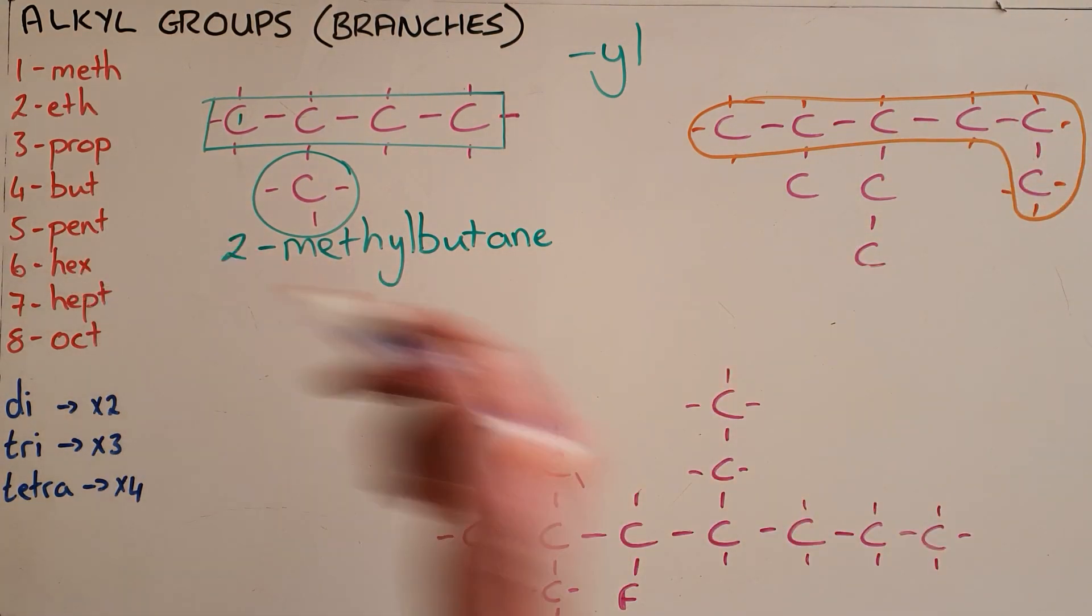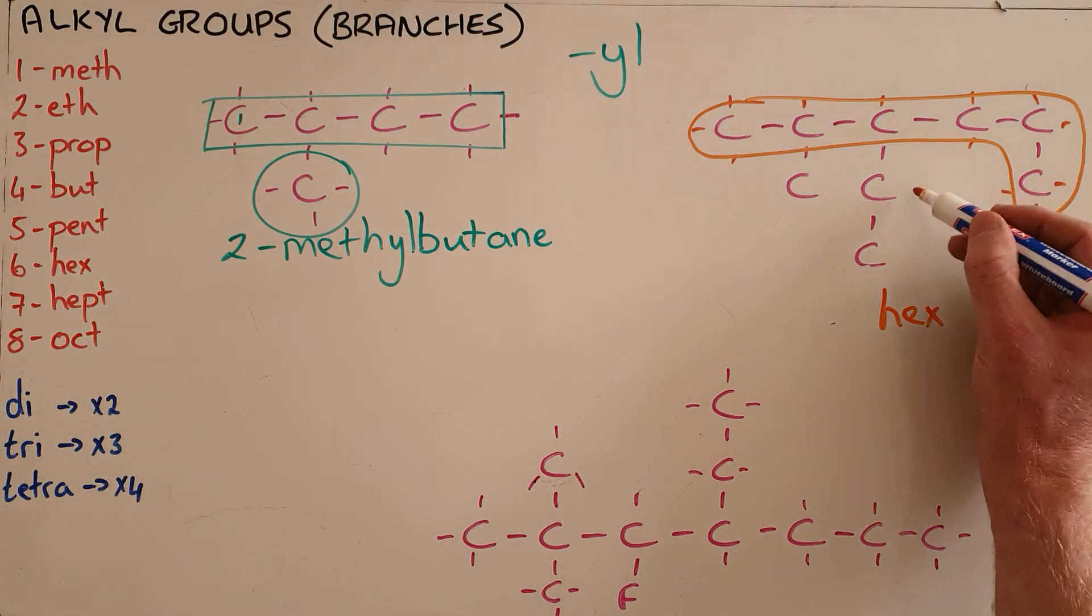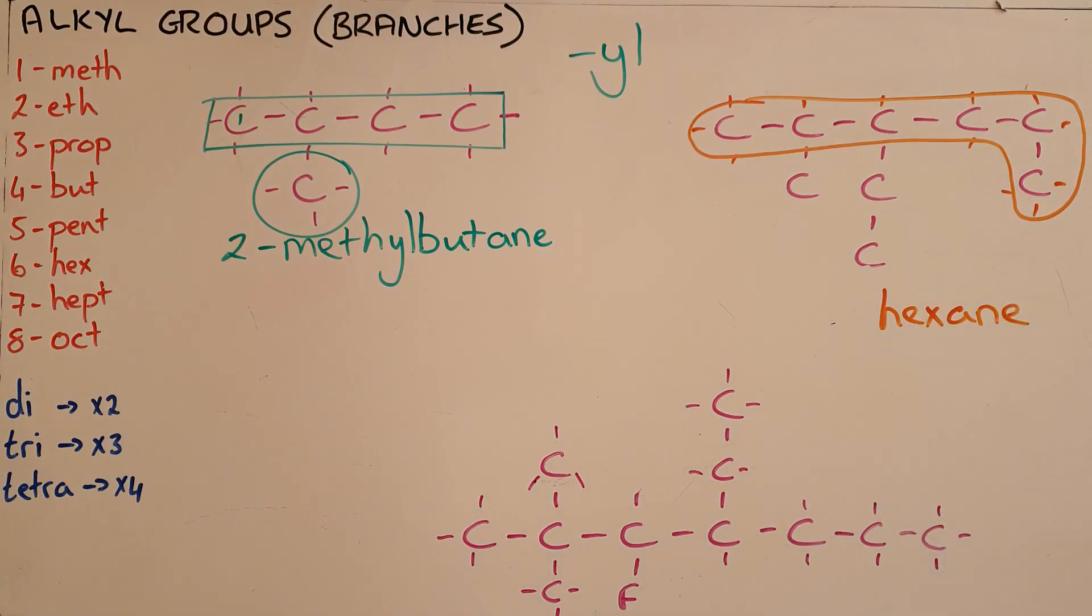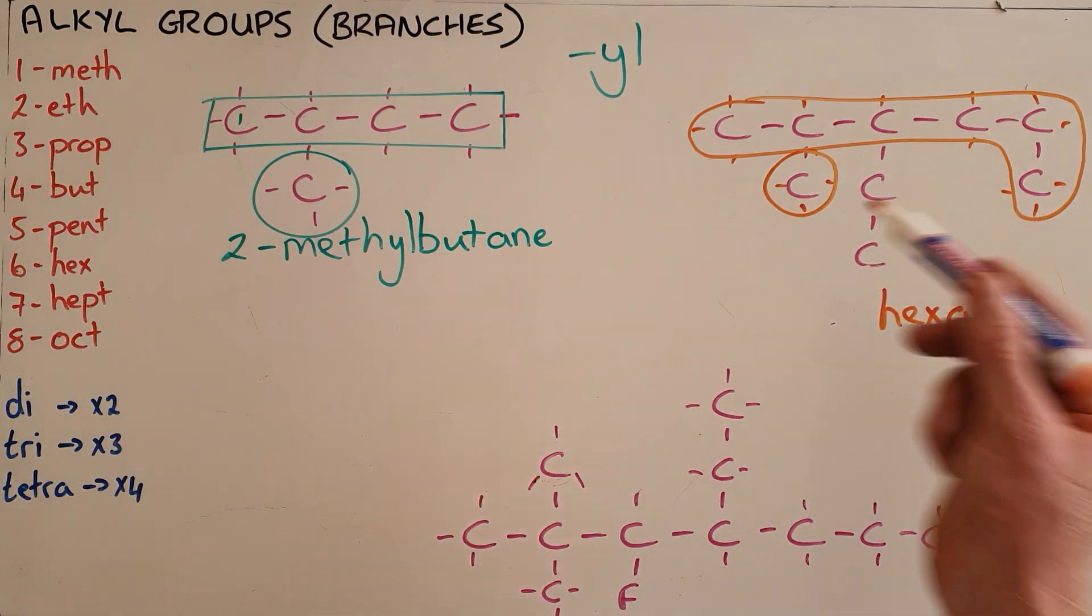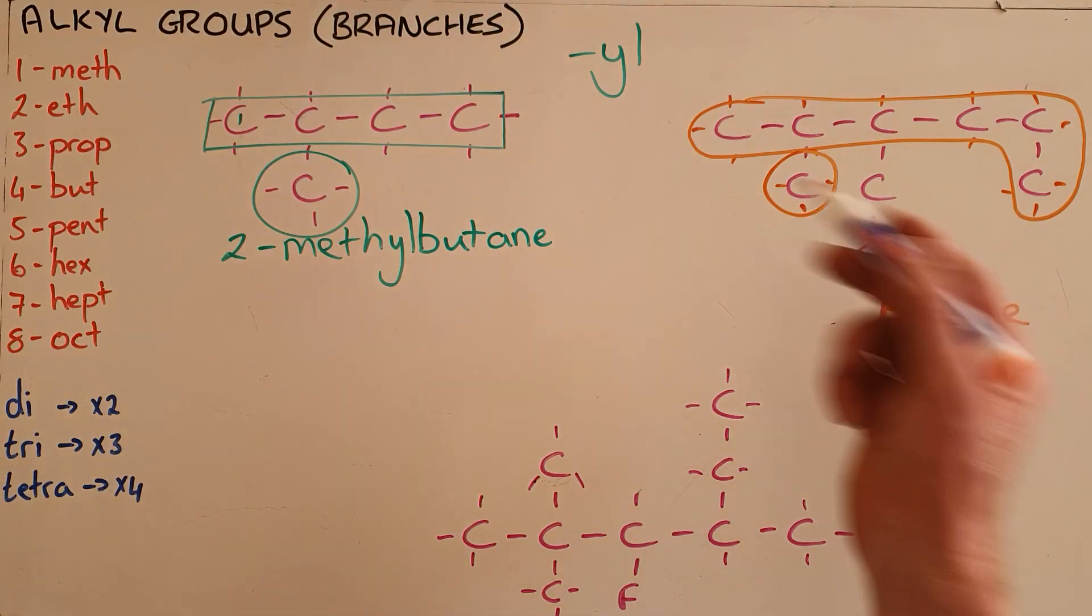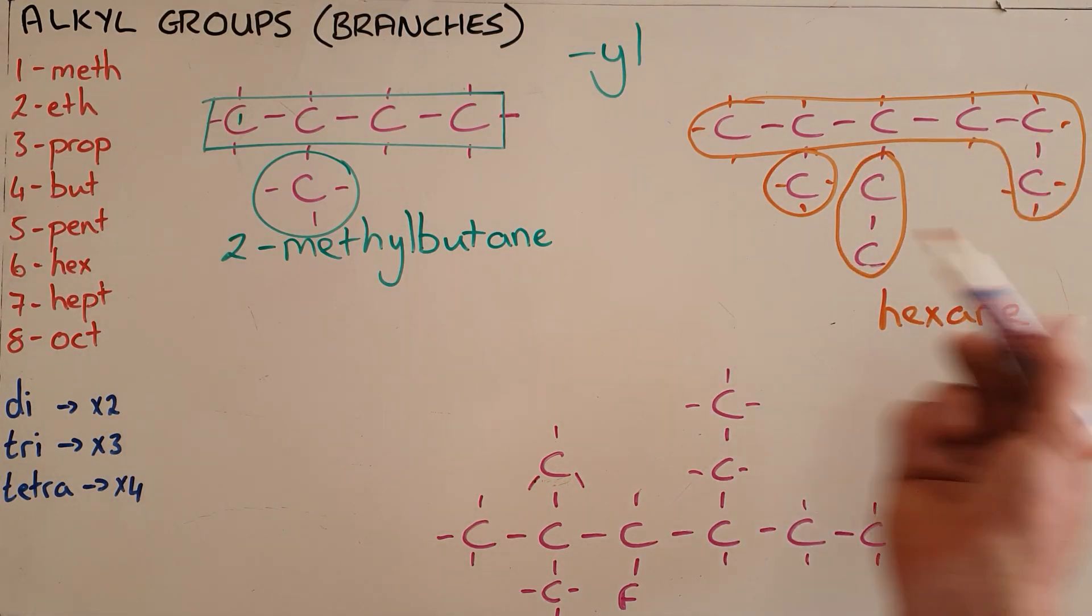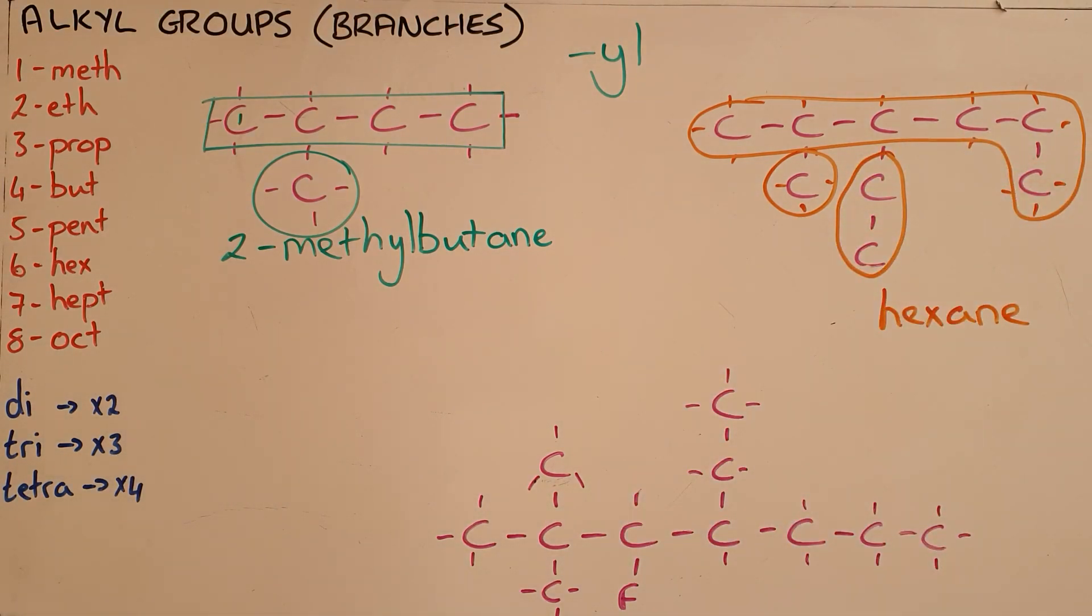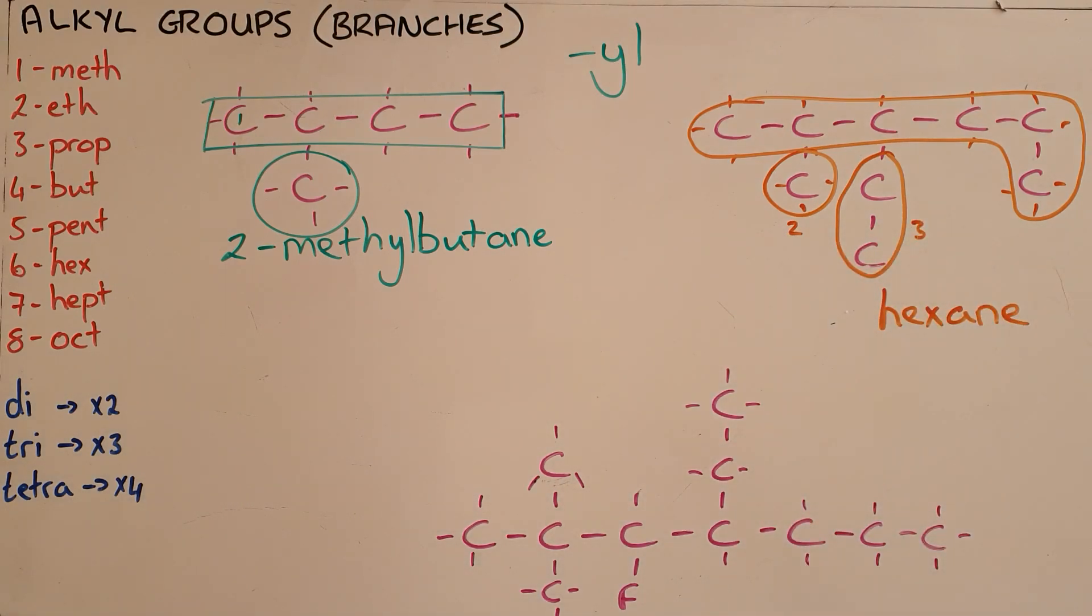We know that six carbons gets the prefix hex and since it is an alkane with only single bonds we would call that hexane. Then what we can see is there are two separate branches. One branch that has only a single carbon that we would know is a methyl group and another branch that has two carbons which makes it an ethyl group. These groups must always be arranged alphabetically so we can see here that alphabetically the ethyl group comes before the methyl group and we must number them as 2-methyl, 3-ethyl.